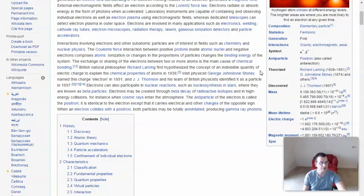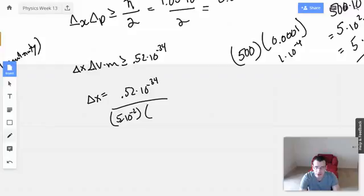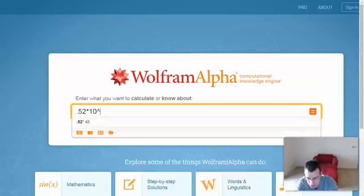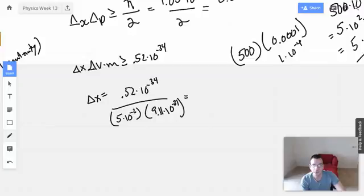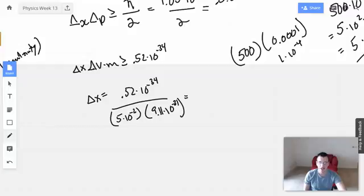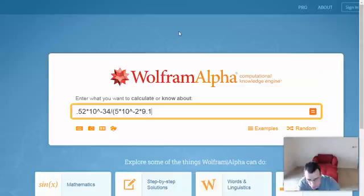Electron mass, 9.11 times 10 to the negative 31st. So now we're going to do 0.52 times 10 to the negative 34th divided by quantity 5 times 10 to the negative 2nd, divided by quantity 5 times 9.11 times 10 to the negative 31st.